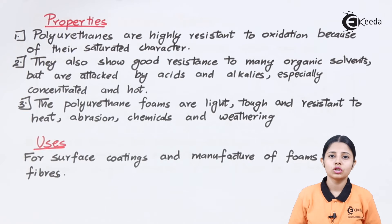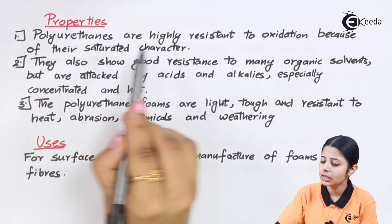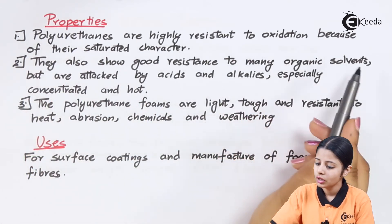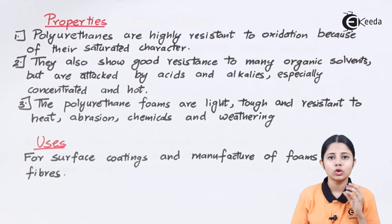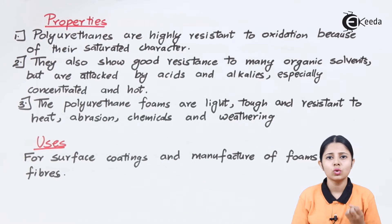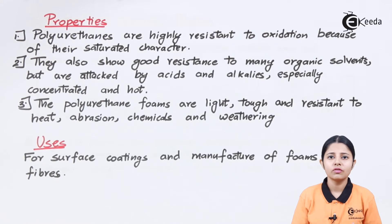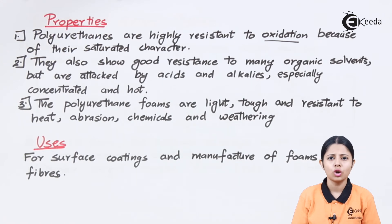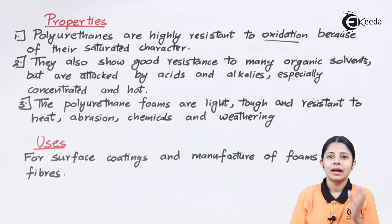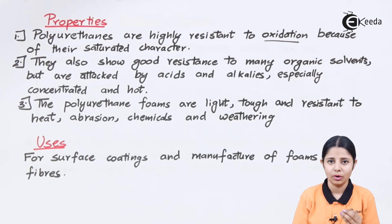Now let us look at the properties and uses of polyurethane rubber. The first property is that polyurethanes are highly resistant to oxidation because of their saturated character. The polyurethane structure already has oxygen in it as C double bond O, and the structure is so complex there is no space for additional oxygen to come and react with it. Oxidation means the addition or combination of oxygen with a reactant, and since oxygen is already part of the double bond, further oxidation does not take place.